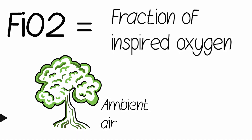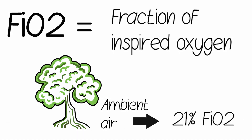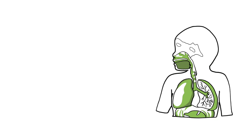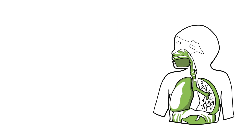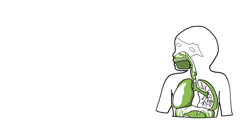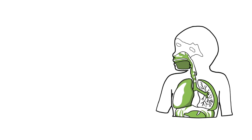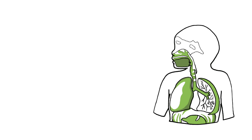Ambient air is naturally 21% FiO2, meaning the oxygen concentration in the air is 21%. The lungs normally function to oxygenate blood and work with the heart to distribute oxygen throughout the body.